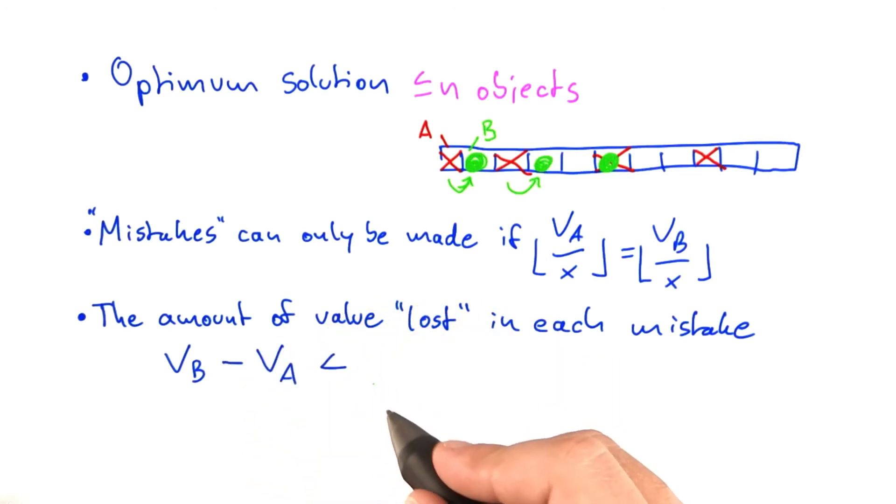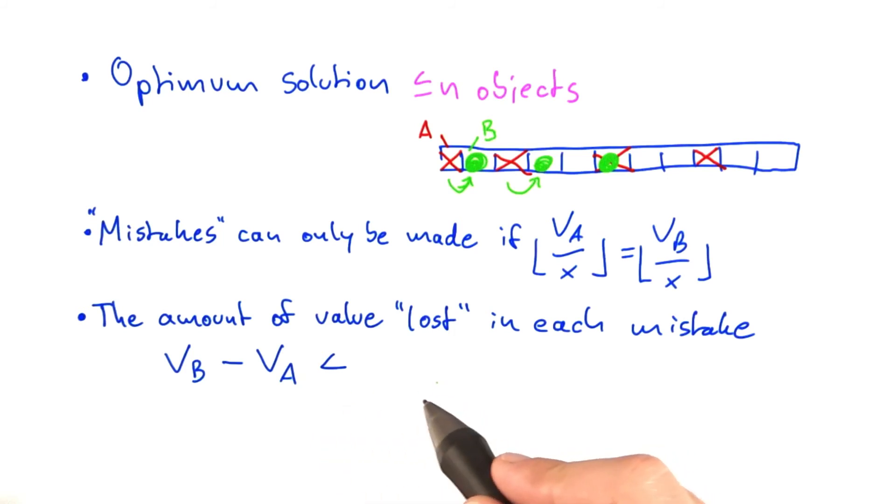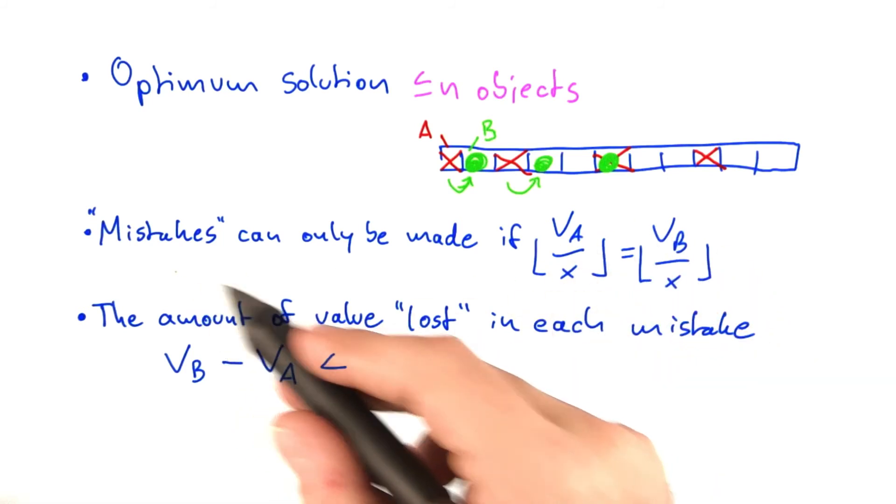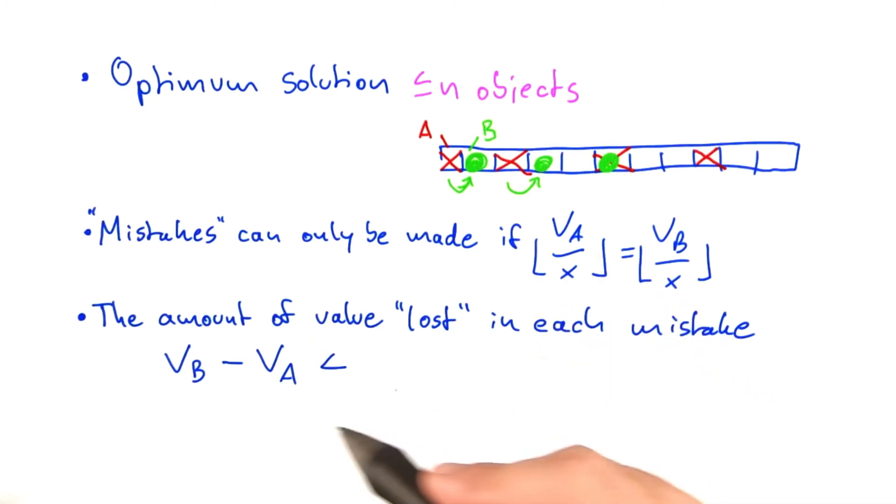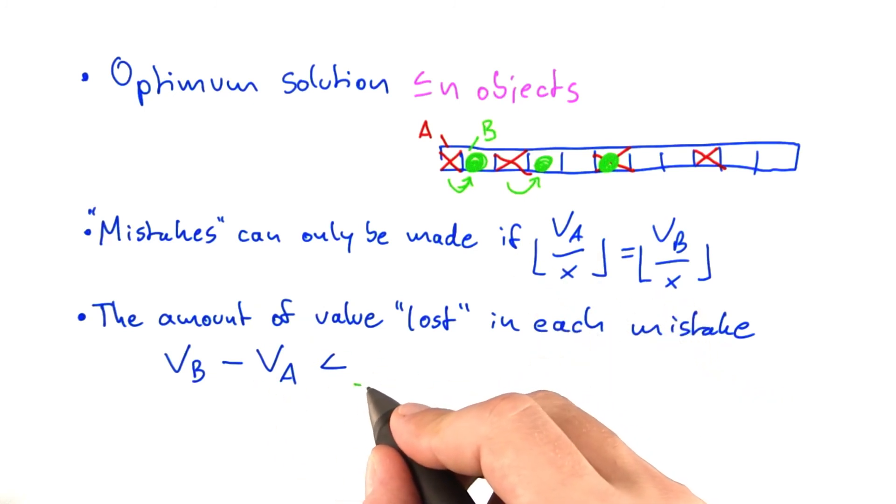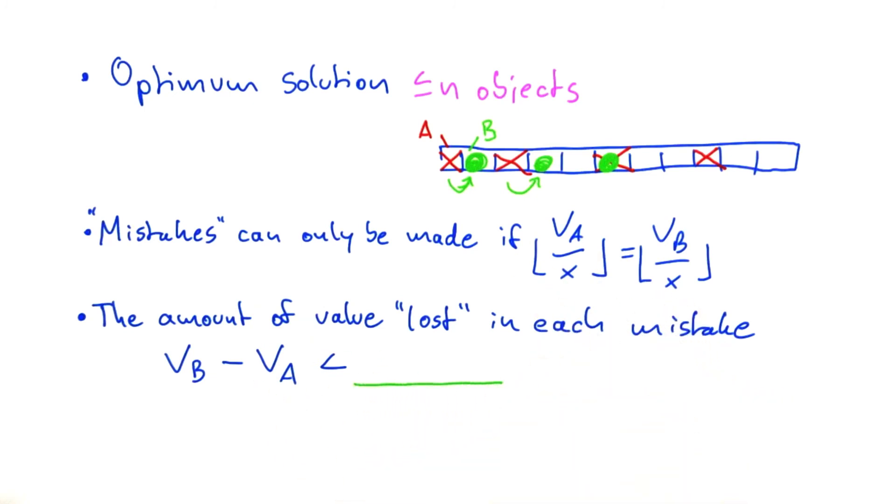And now my question to you, and this is of course a bit challenging, is what is the maximum difference in value that actually objects b and a can have? And the way to figure this out is to look at this condition, because the mistake is only made if this here is fulfilled. So what I would like you to figure out is, what is the maximum difference in value between the objects b and a? And please enter your answer here.